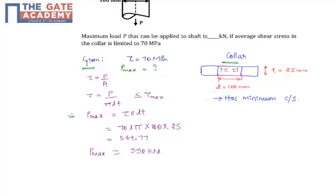Therefore from this we can find the maximum load that can be applied that will be τ into π·d·t. Now substituting the values of the shear stress, diameter and the thickness of the collar will find the maximum load approximately equal to 550 kN.